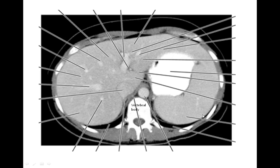We've also got the ribs, which lie further laterally. The next layer up from bones was the muscles of the posterior abdominal wall. We can't see the psoas major or quadratus lumborum muscles quite yet, but what we can see is the crura of the diaphragm, which lie either side of the abdominal aorta. As this line indicates, the crura basically wrap around the aorta, which is here.